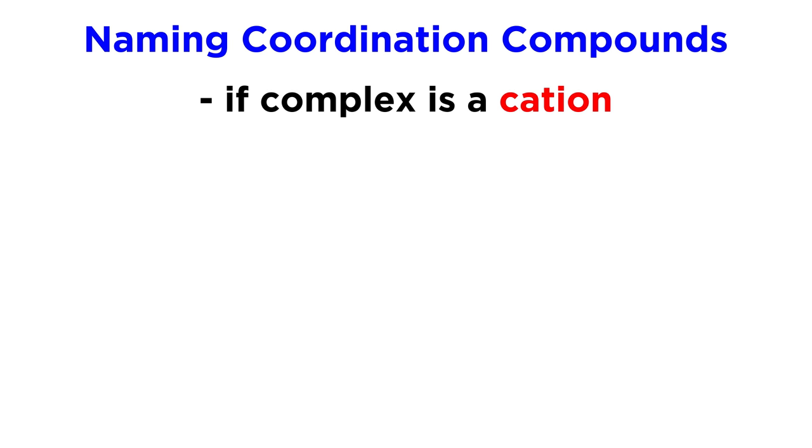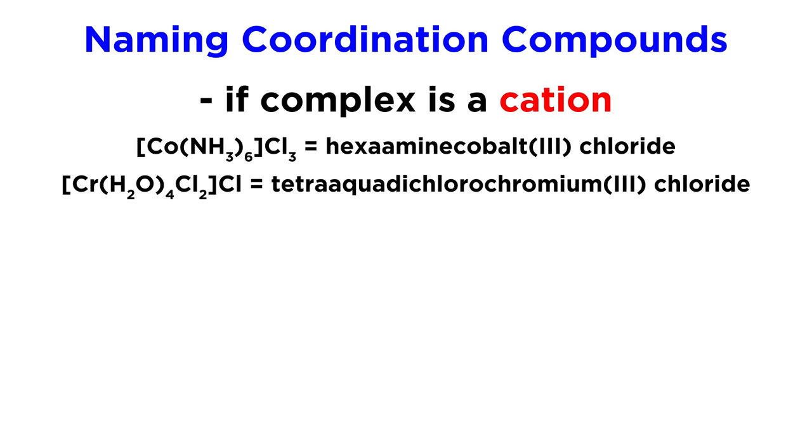Now to put things together, when the complex as a whole is a cation, we will list the metal by the name of its element, followed by a Roman numeral in parentheses to indicate its oxidation state. So as we can see in these examples, the ligands are listed first, with prefixes as necessary to indicate the number of them, then the metal ion with its oxidation state, and then any counter ions to the complex if applicable.